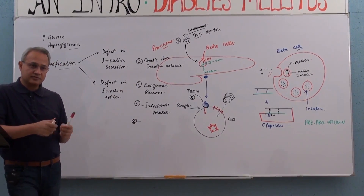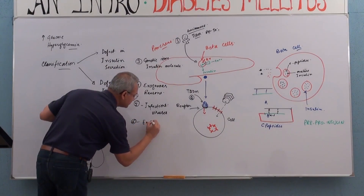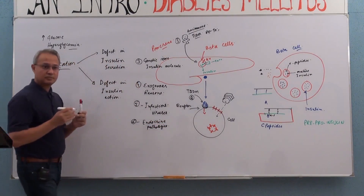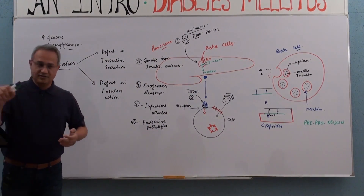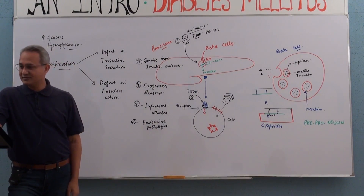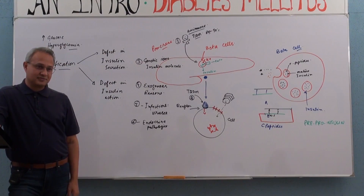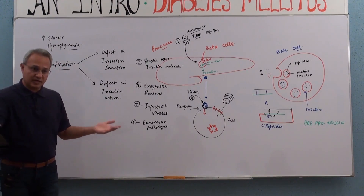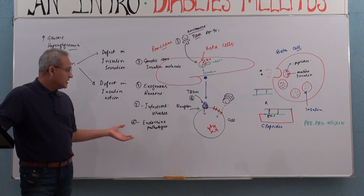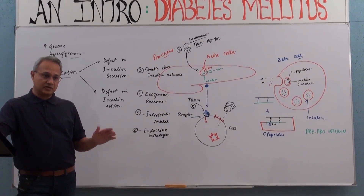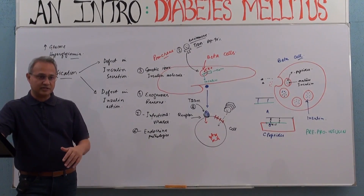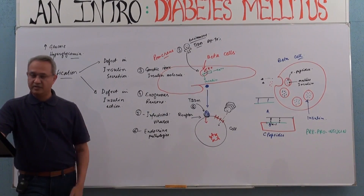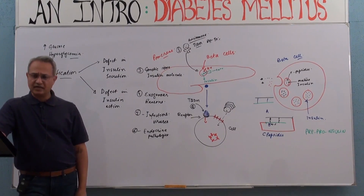Any endocrine issues or defects? Many endocrine pathologies — for example, acromegaly, Cushing syndrome, and pheochromocytomas — can cause gluconeogenesis, glycogenolysis, and lipolysis, resulting in increased glucose levels at the end of the day. Can hyperthyroidism do it? Should hyperthyroidism cause hyperglycemia?